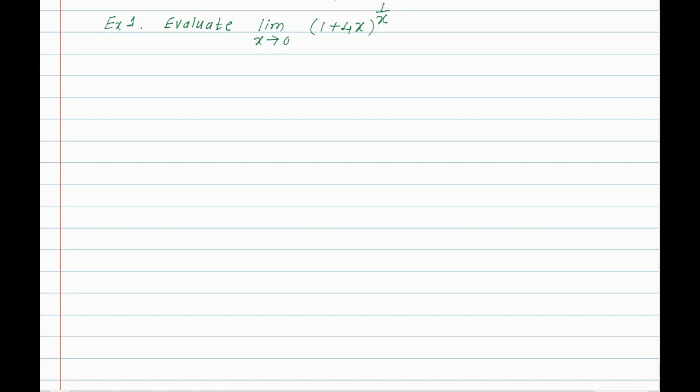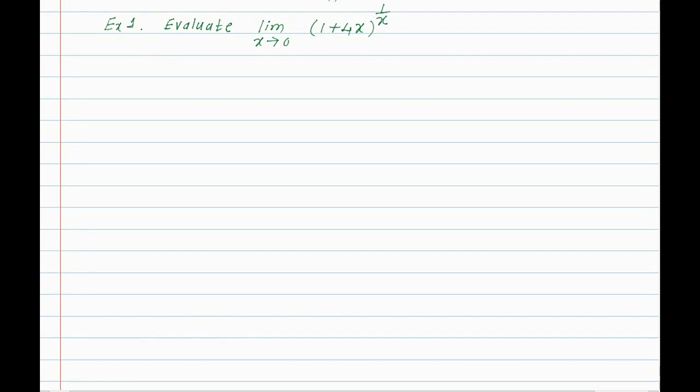First problem: evaluate the limit x tending to 0 of (1 + 4x) to the power 1/x. As x tends to 0, 4x tends to 0, so the bracket tends to 1. And 1/x tends to infinity. So this is the indeterminate form 1 to the power infinity.